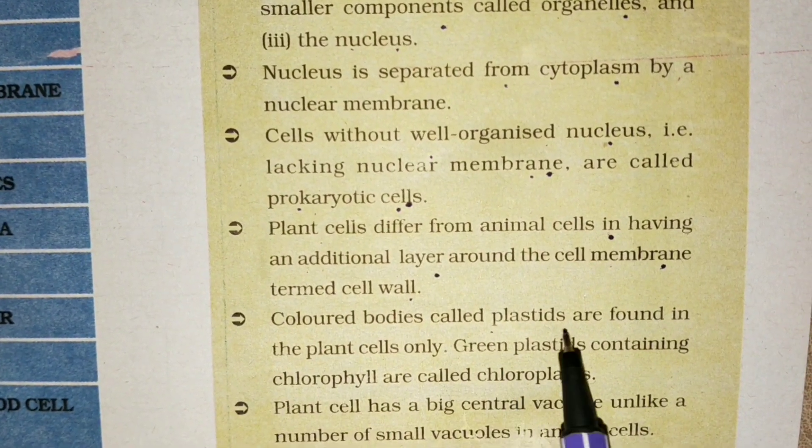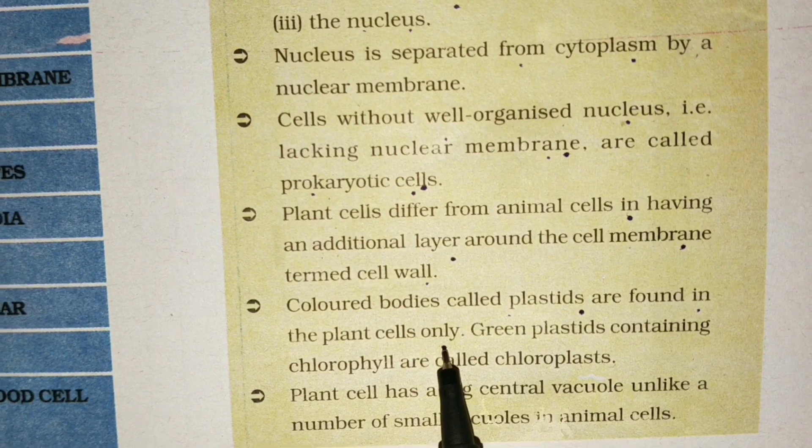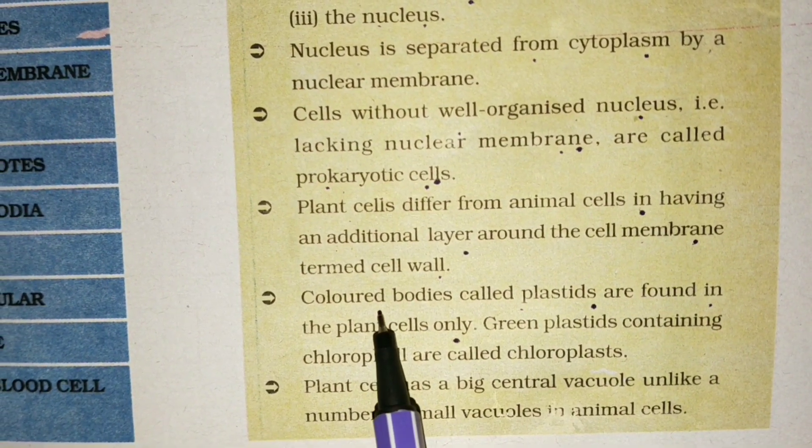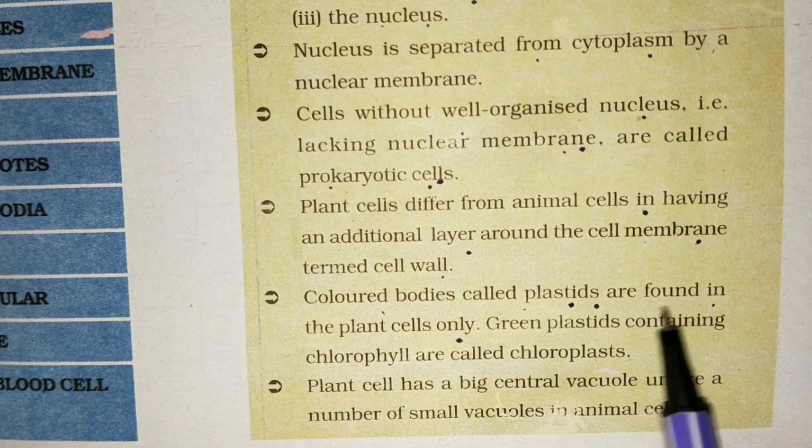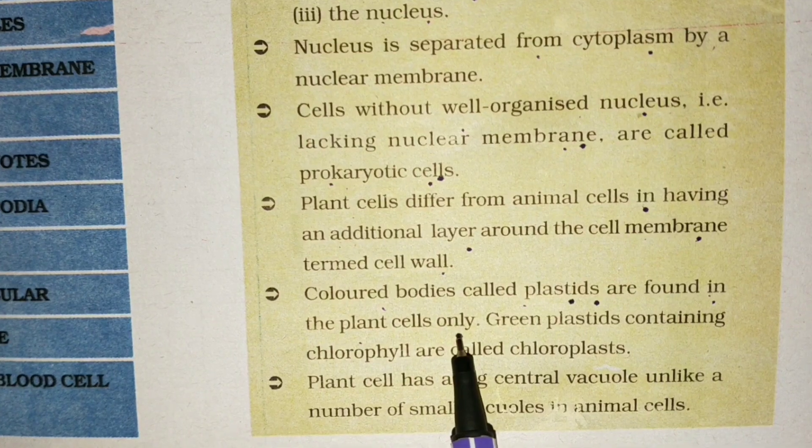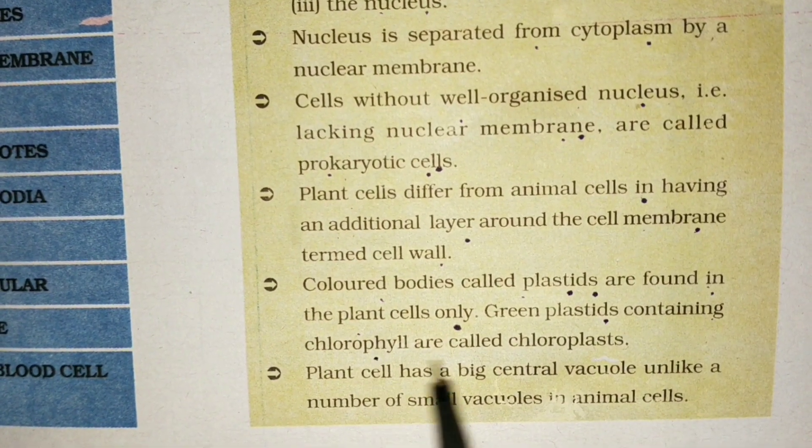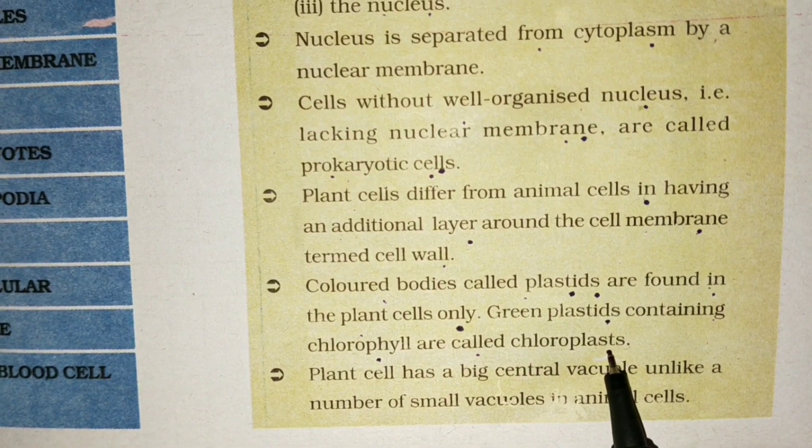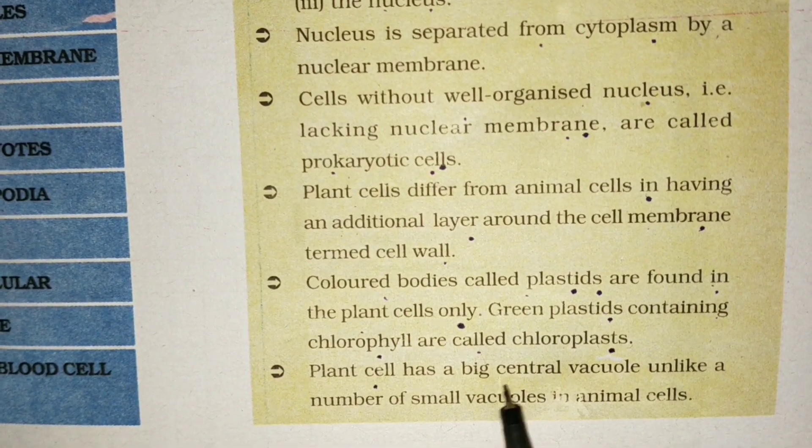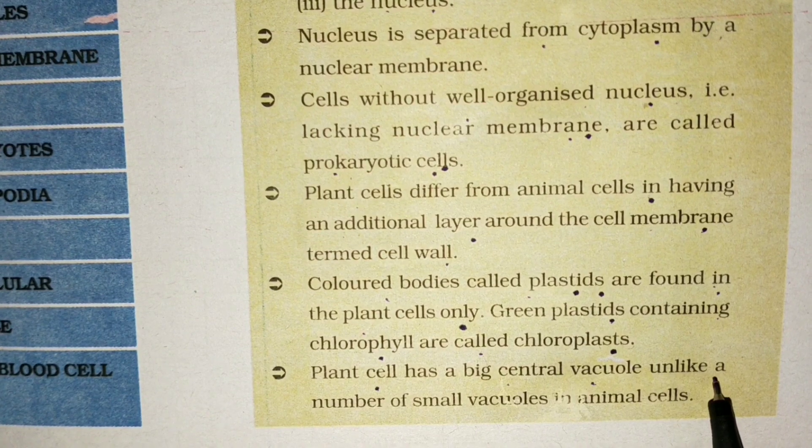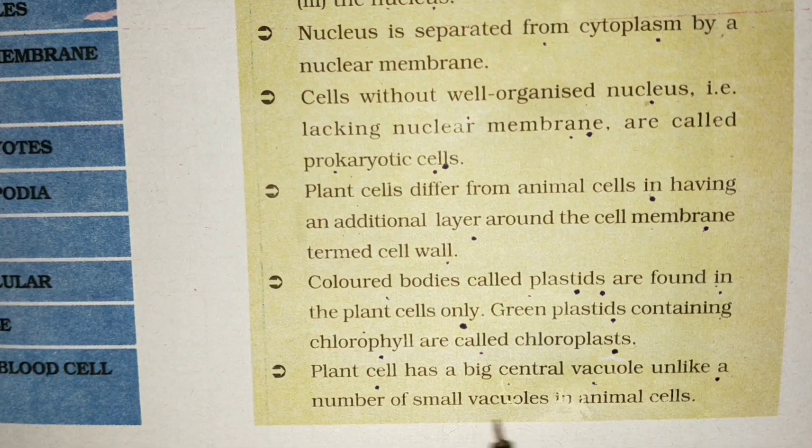bodies called plastids are found in plant cells only. Green plastids containing chlorophyll are called chloroplasts. Plant cell has a big central vacuole unlike a number of small